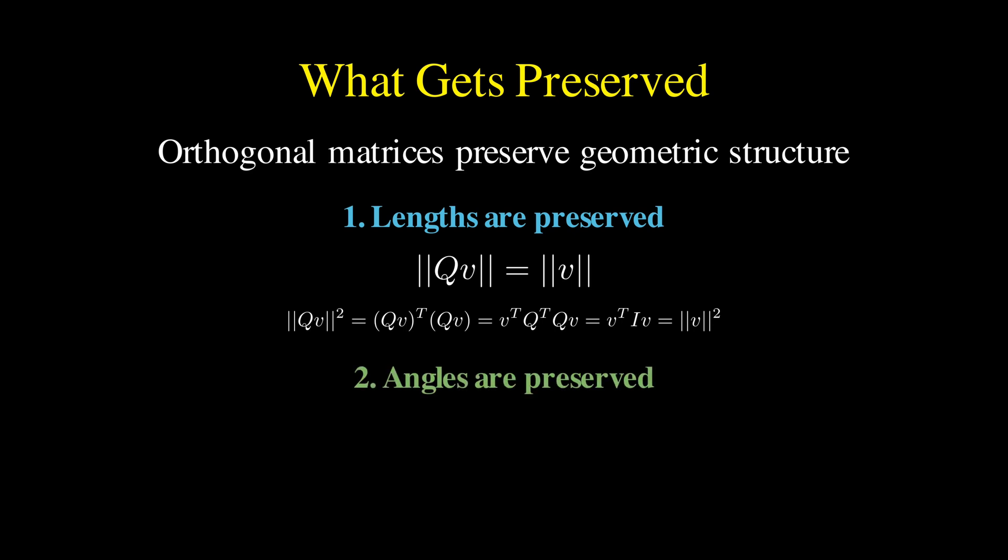Second, orthogonal matrices preserve angles between vectors. If we have two vectors V and W, then the dot product of QV and QW equals the dot product of V and W.